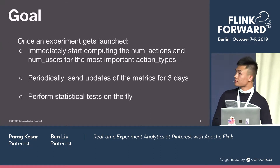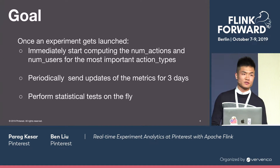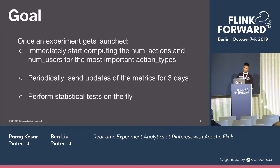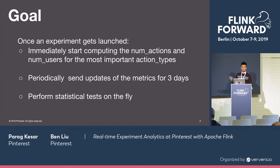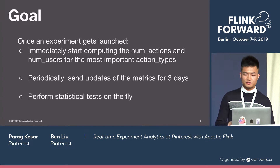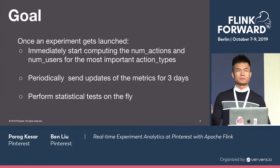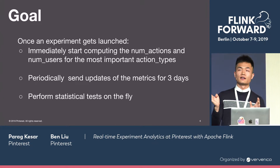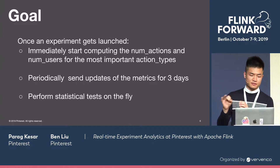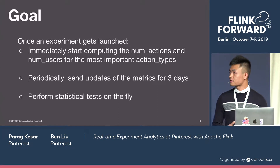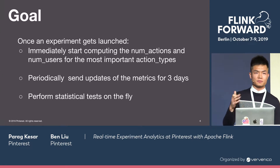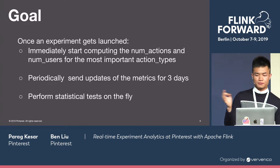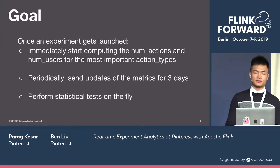The goal for this pipeline is: once an experiment is launched, we want to immediately start computing num actions and num users — volume and propensity metrics — for a set of the most important action types, such as number of searches, number of clicks, and impressions. We want to periodically send metrics updates since the launch of the experiment, and this process should continue for three days. We also perform statistical tests on the fly.